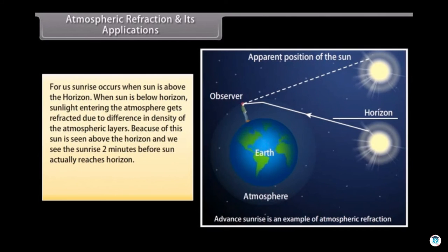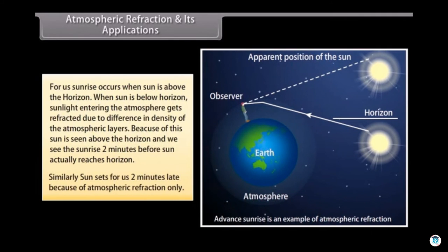For us, sunrise occurs when sun is above the horizon. When sun is below horizon, sunlight entering the atmosphere gets refracted due to difference in density of the atmospheric layers. Because of this, sun is seen above the horizon and we see the sunrise two minutes before sun actually reaches horizon. Similarly, sun sets for us two minutes late because of atmospheric refraction.